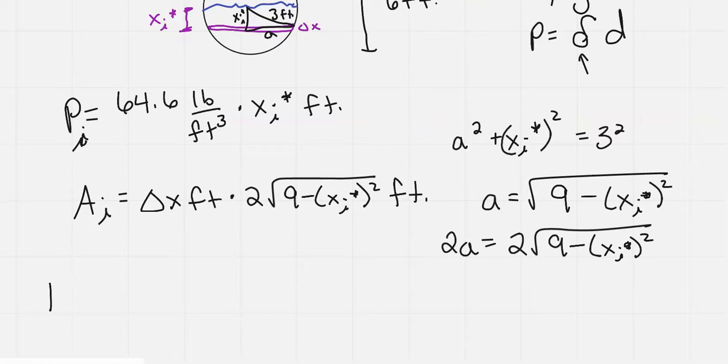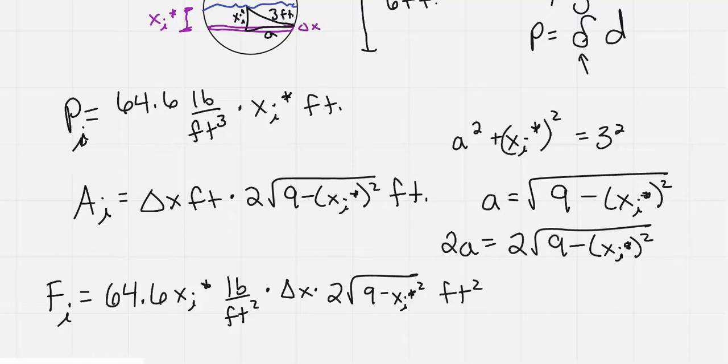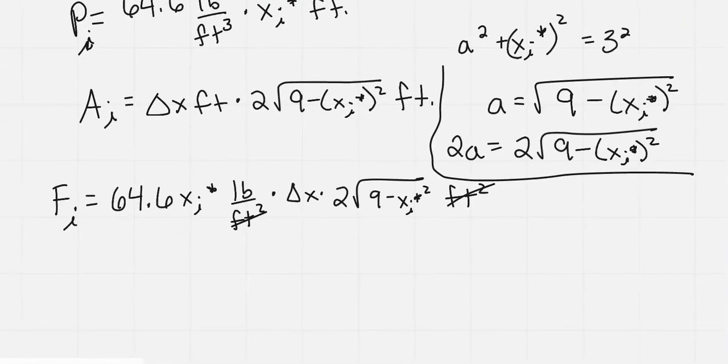So if I look at my force at the i-th slice, that would be the pressure times the area. So it's 64.6 x sub i star pounds per square foot, I simplified it a bit, times delta x times 2 square root of 9 minus x sub i star squared square feet. And then notice the square feet cancel out, and you're left with just pounds, which is what we want for force when we're talking about our US units.